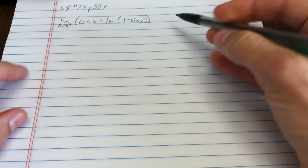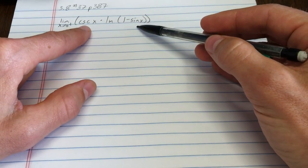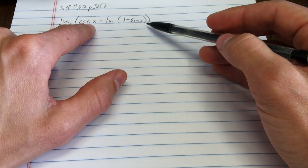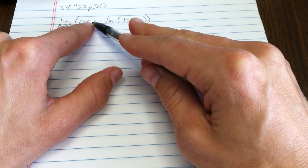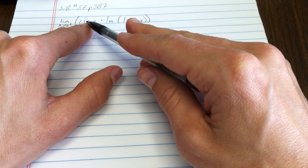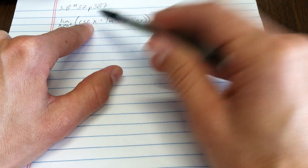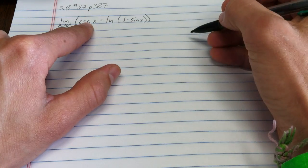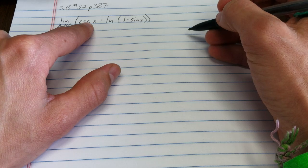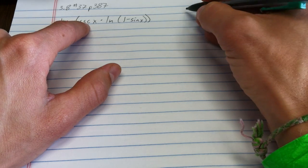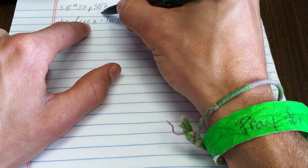Now that's not in the classic indeterminate form because it's not a fraction, but let's see what happens. As x goes to 0, cosecant, that's 1 over sine, so sine goes to 0, so this would go to infinity.